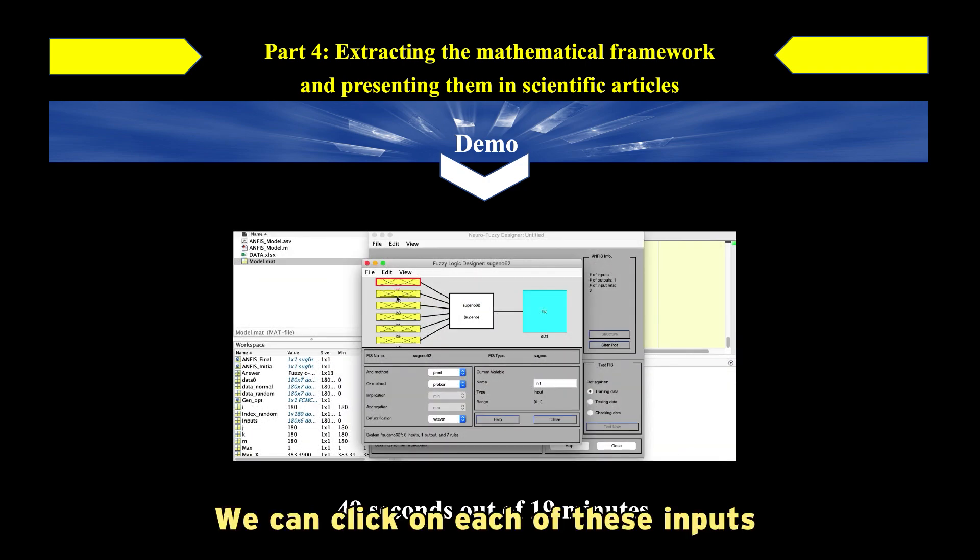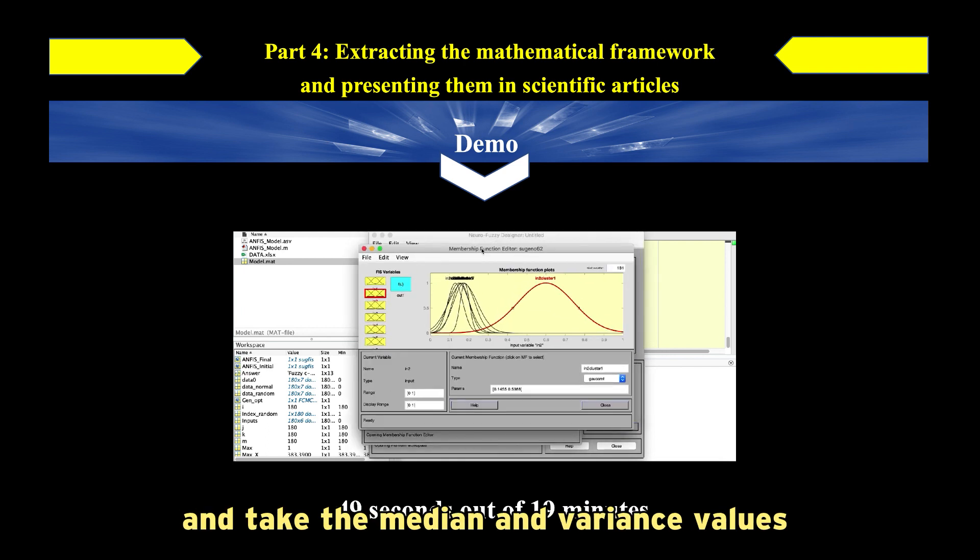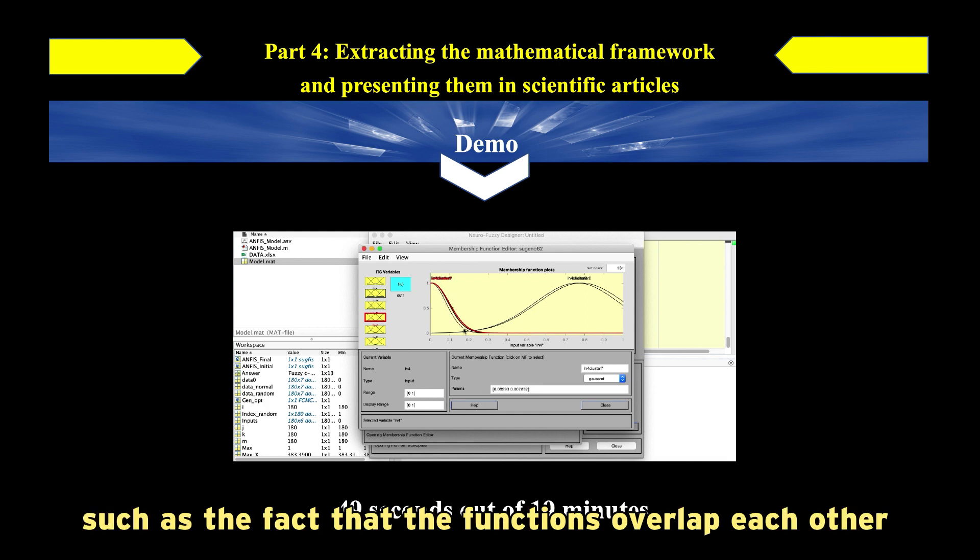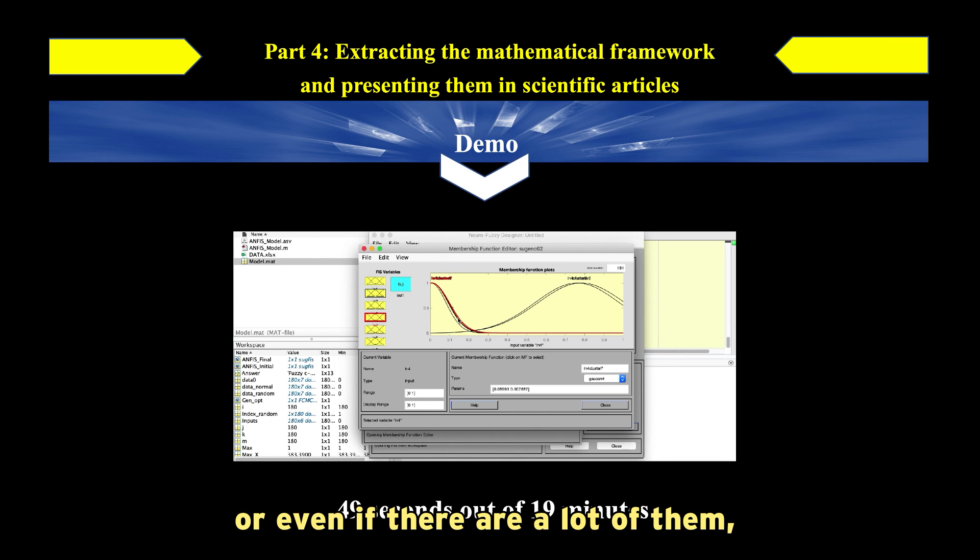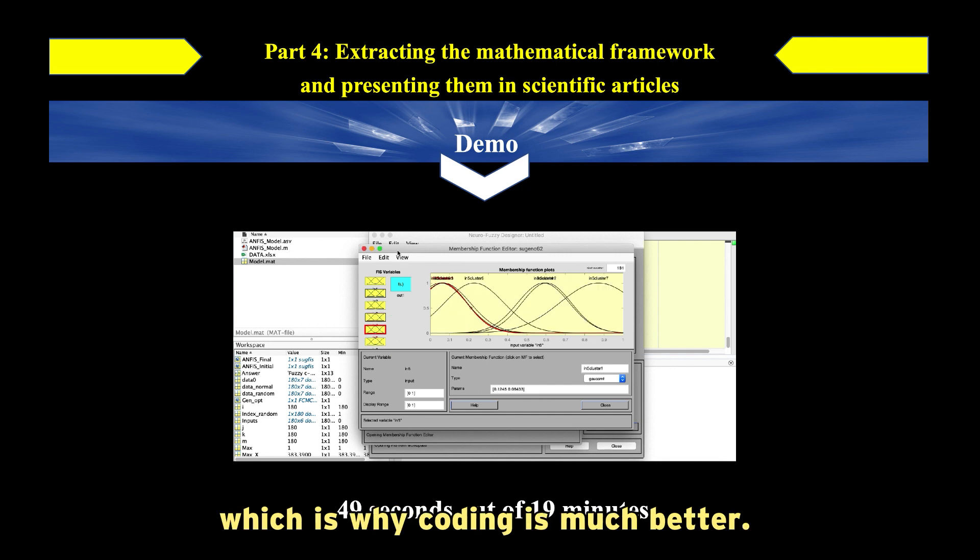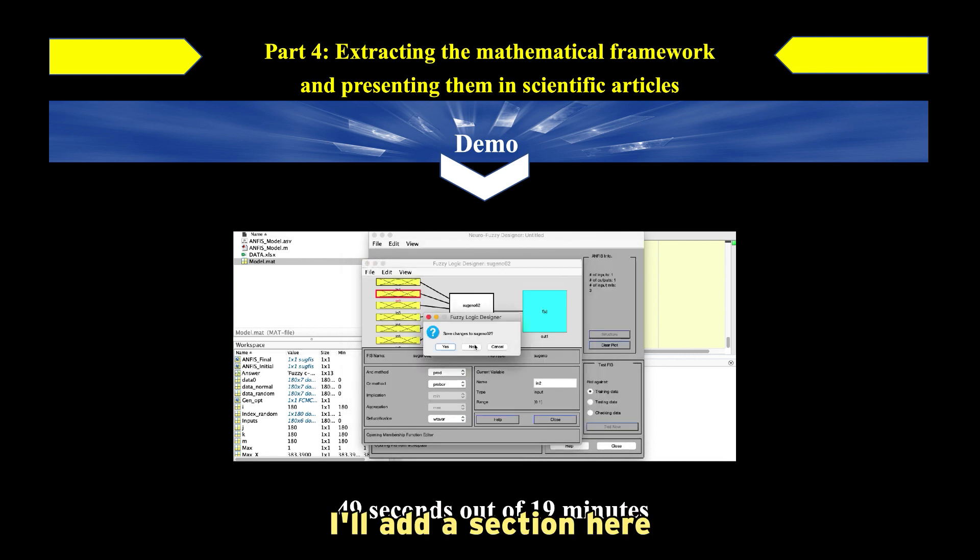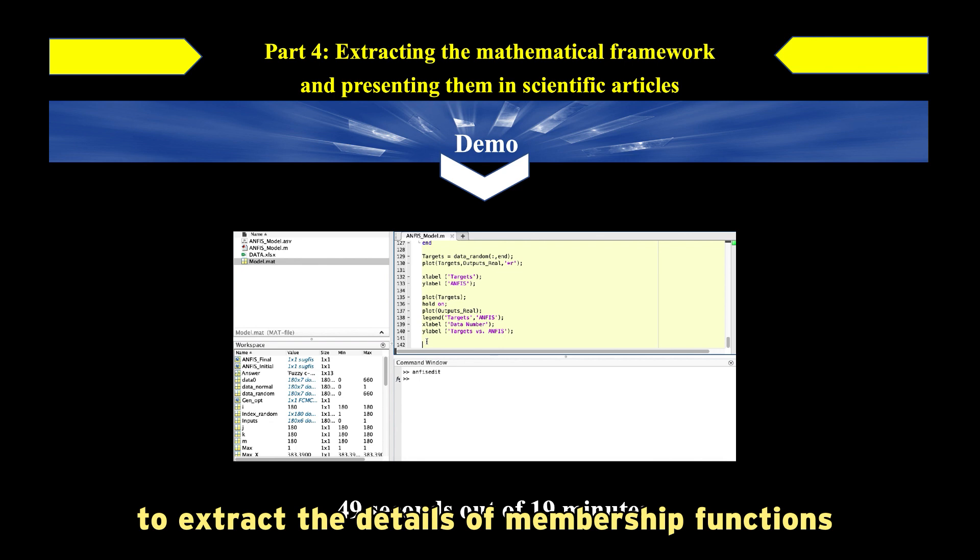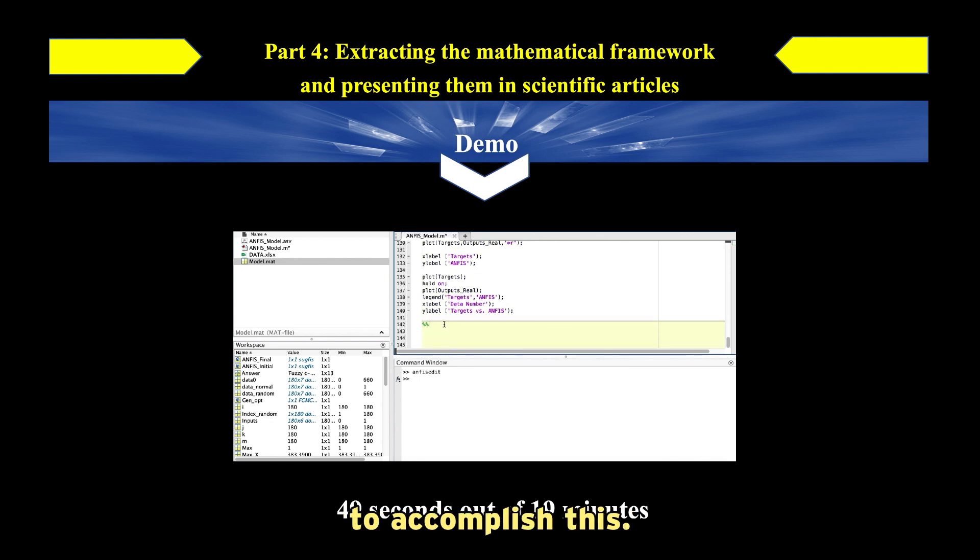We can click on each of these inputs and take the median and variance values for each of these membership functions that are here, which means it is a time-consuming task. Sometimes for various reasons, such as the fact that the functions overlap each other, even if there are a lot of them, it is a difficult task and there is a possibility of error in the collection, which is why coding is much better. Therefore, I'll add a section here to extract the details of membership functions to accomplish this.